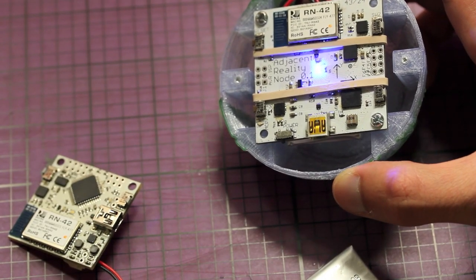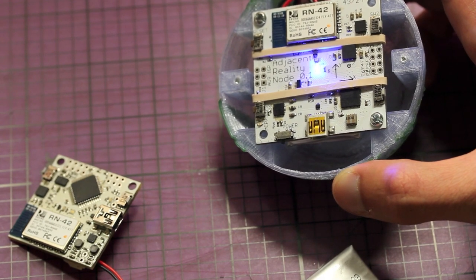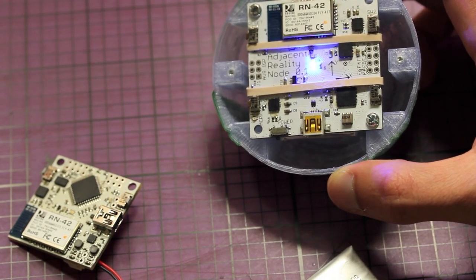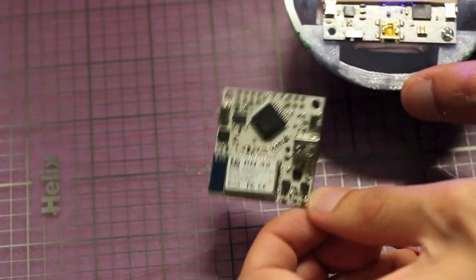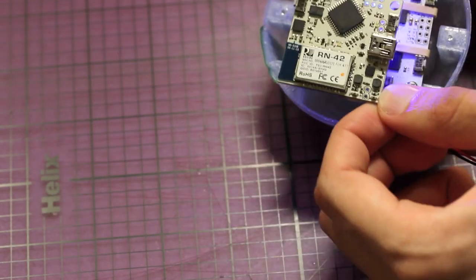Inside the globe we have revision one of the motion tracker that Donny and I are working on, called the Adjacent Reality Tracker. Ignore the word node there, we had a name collision. Here is revision two, which is about half the board area.